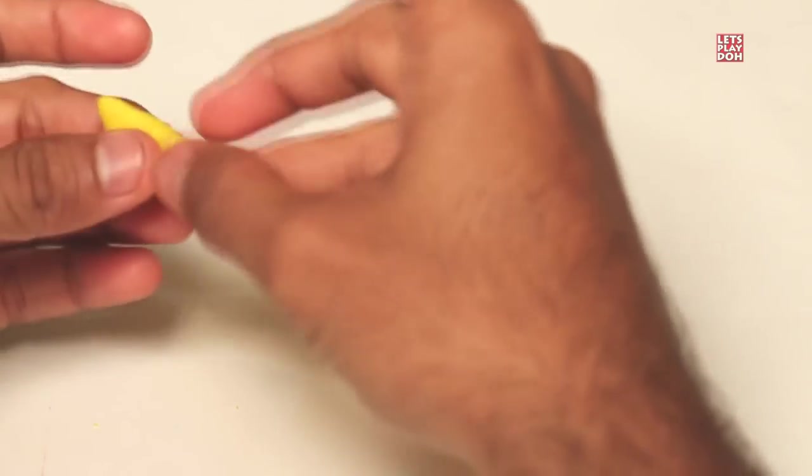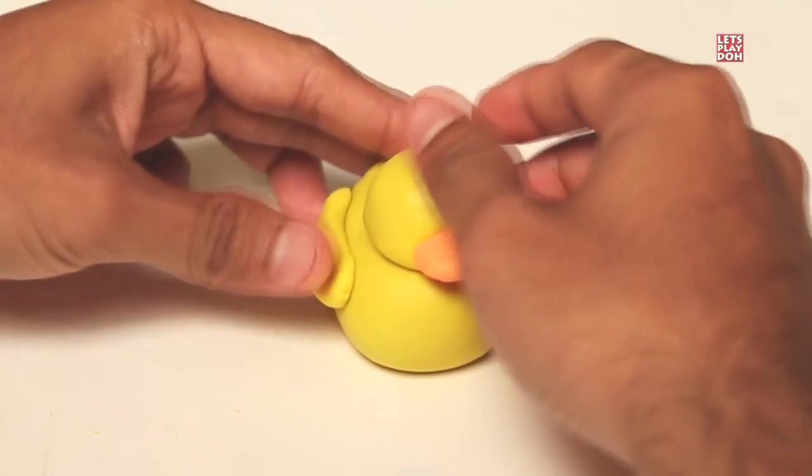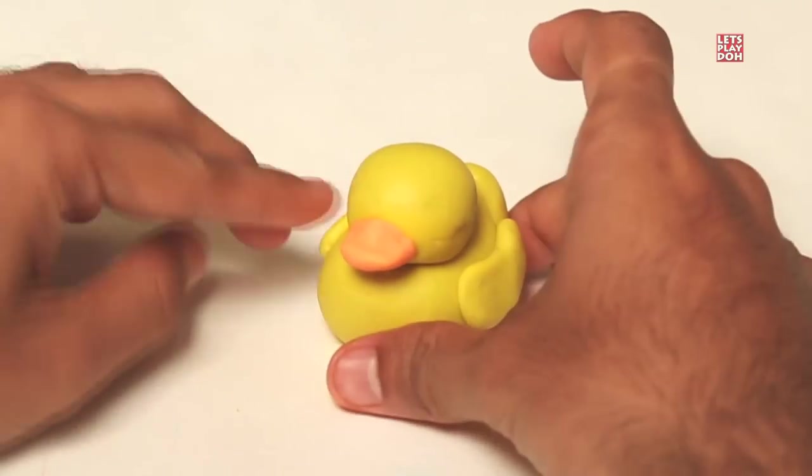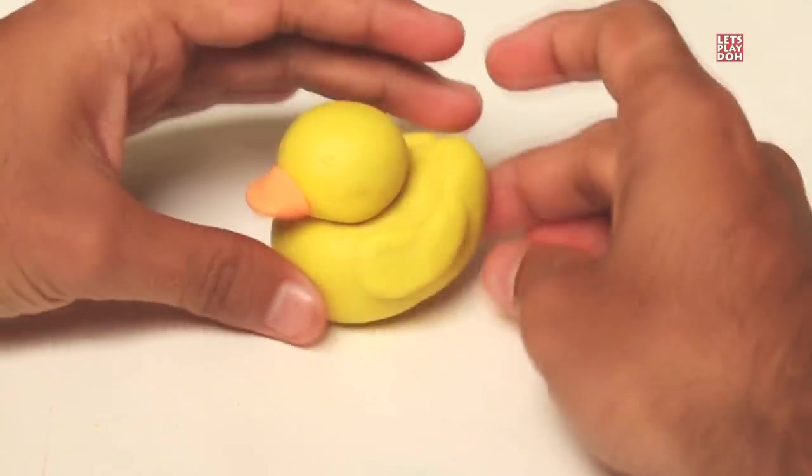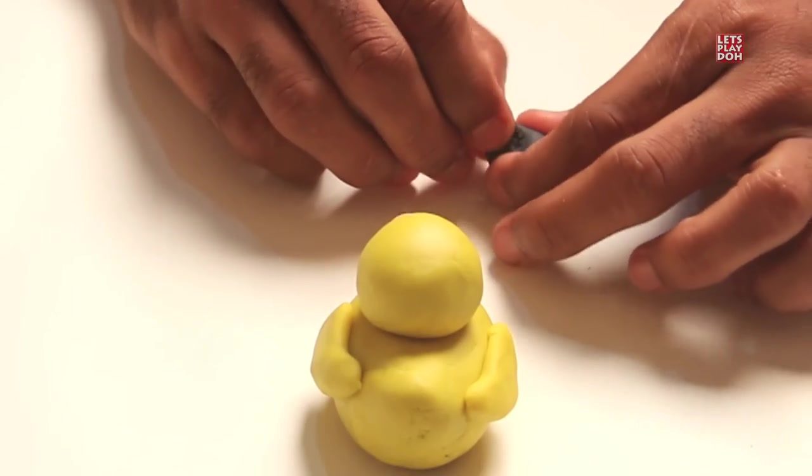They almost go almost all the way back towards the tail, but you can still see them in front. We have the body and the head and the bill and the wings of our ducky. But he needs a little personality, I think so.